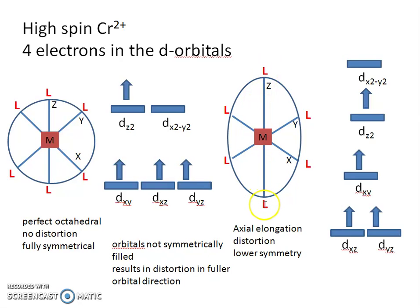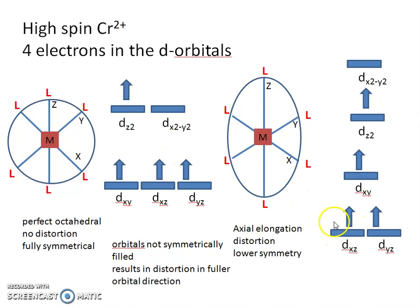Since these ligands have moved further away, there will be less repulsion in the z direction, which means the orbitals containing z will have a lower energy. We started with three degenerate orbitals, and after distortion the orbitals containing z have lower energy. Similarly, we started with two degenerate orbitals at a higher energy level, and after distortion the orbital with z has a lower energy, because the ligands in the z direction have moved further away from the metal center.